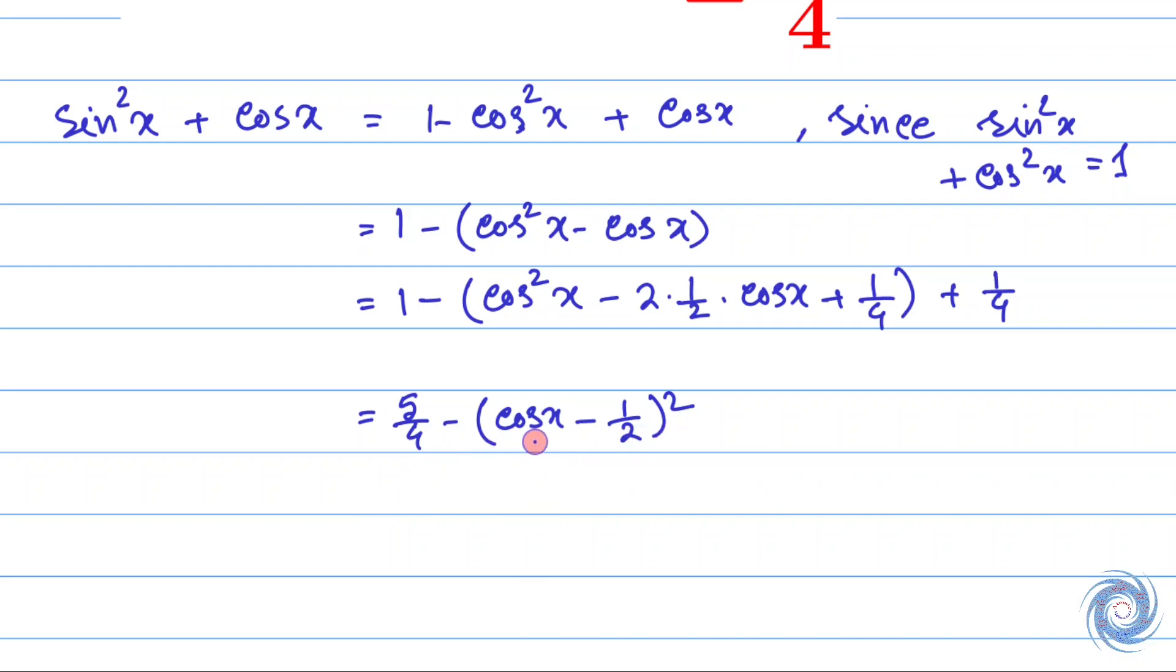Here we have a whole square of (cos x - 1/2), and therefore this quantity is always non-negative. And therefore, the maximum value of 5/4 - (cos x - 1/2)² is attained when the absolute value of (cos x - 1/2) is minimum.